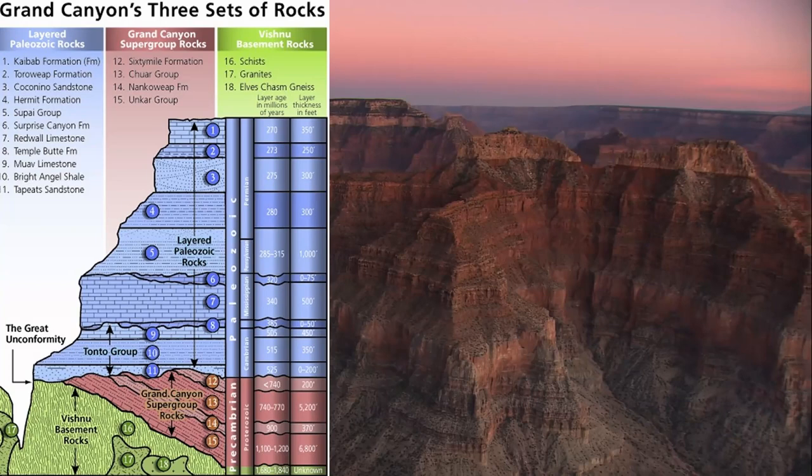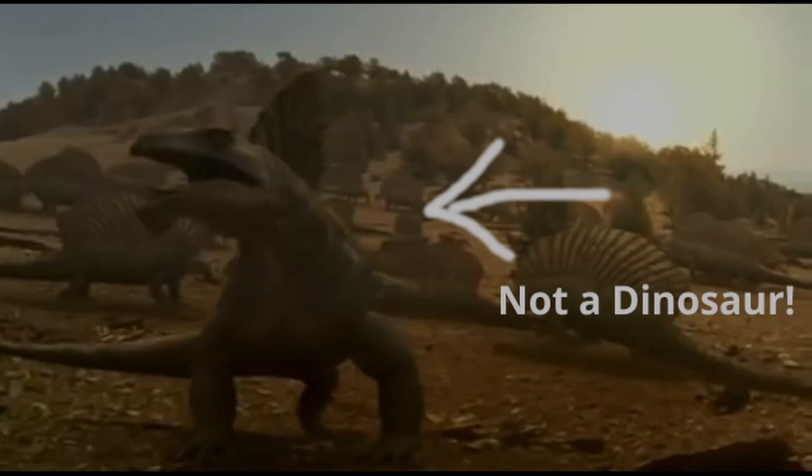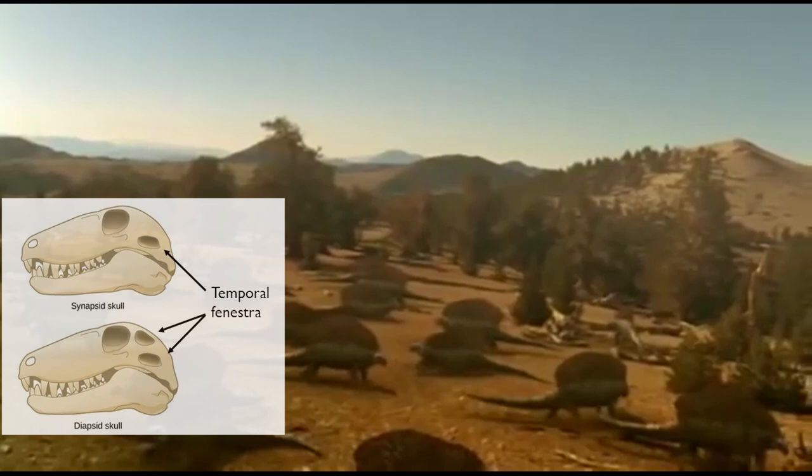We hit the Kaibab Formation and Coconino Sandstone. These rocks were deposited around 270 to 280 million years ago in the Permian era — the time period right before the dinosaurs started to exist. Around this time there are some key skull characteristics that develop, marking the split between the proto-reptiles and the proto-mammals.